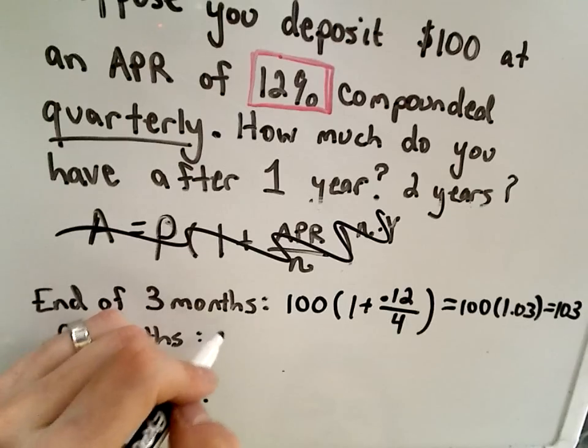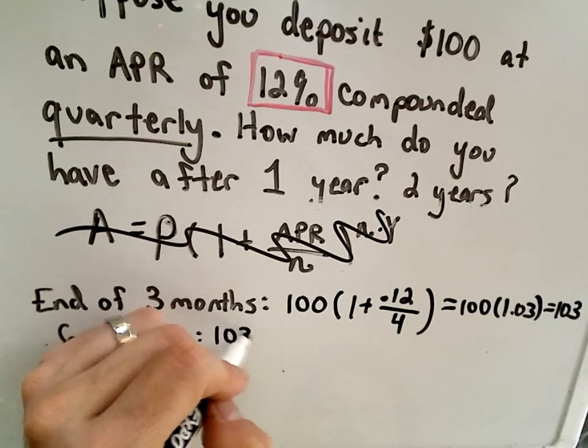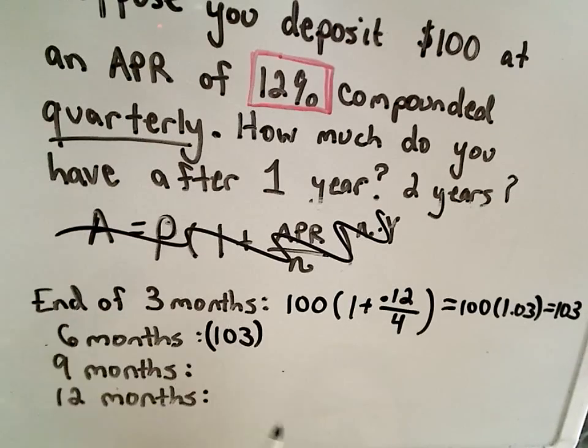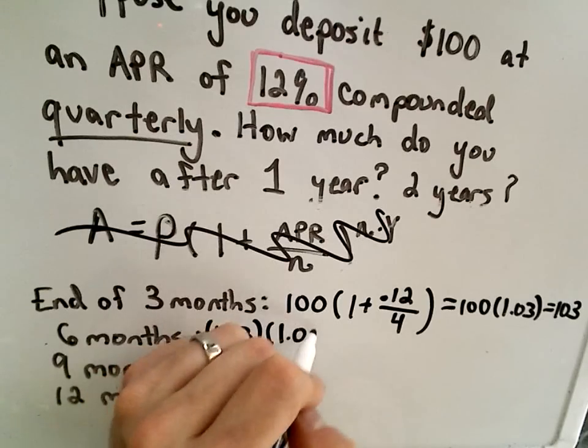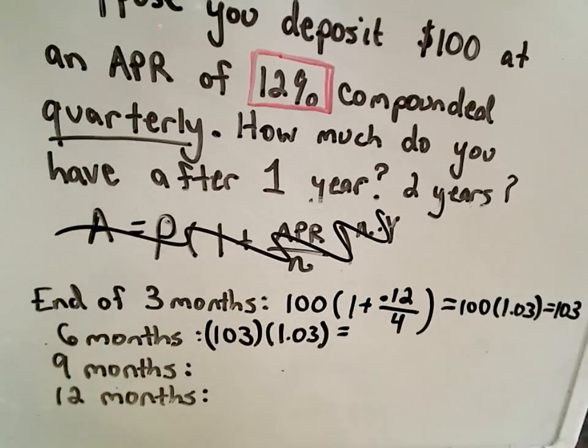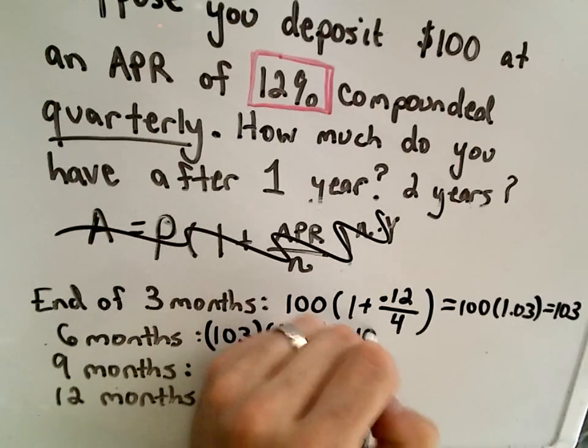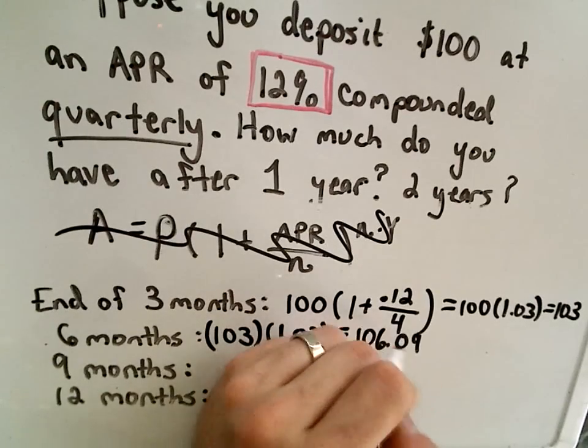Now at the end of six months, what's going to happen is I've now got my additional little bit of money. Instead of having $100 earning interest, now I have $103 earning interest. Again, if I multiply that by 1.03, let's see what we get here. So this is 106.09.